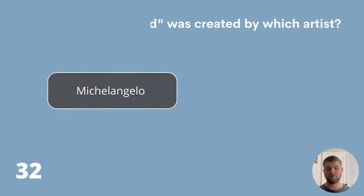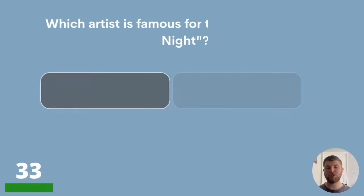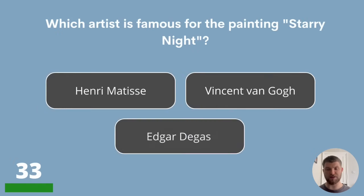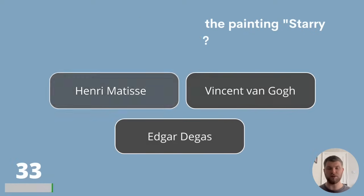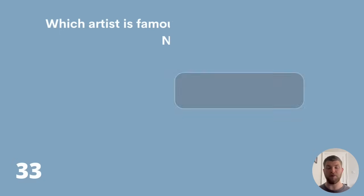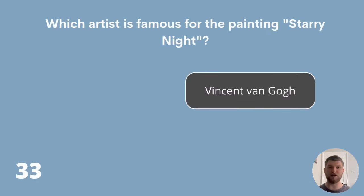Question 33. Which artist is famous for the painting Starry Night? Was that Henri Matisse, Vincent van Gogh or Edgar Degas? Starry Night was painted by Vincent van Gogh.